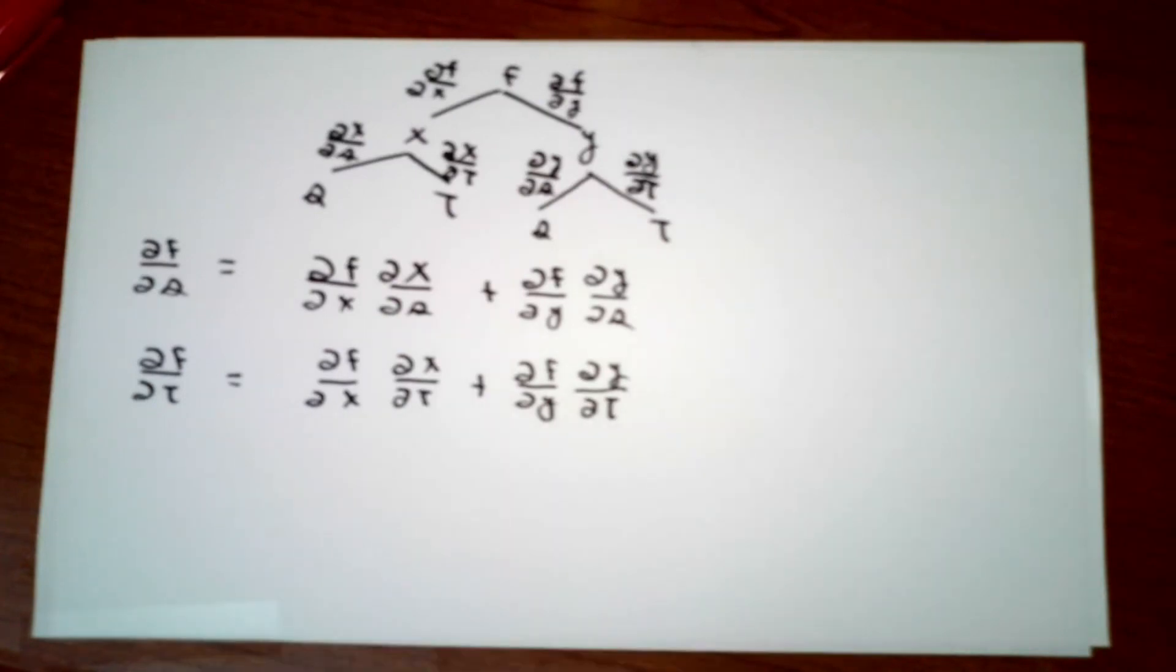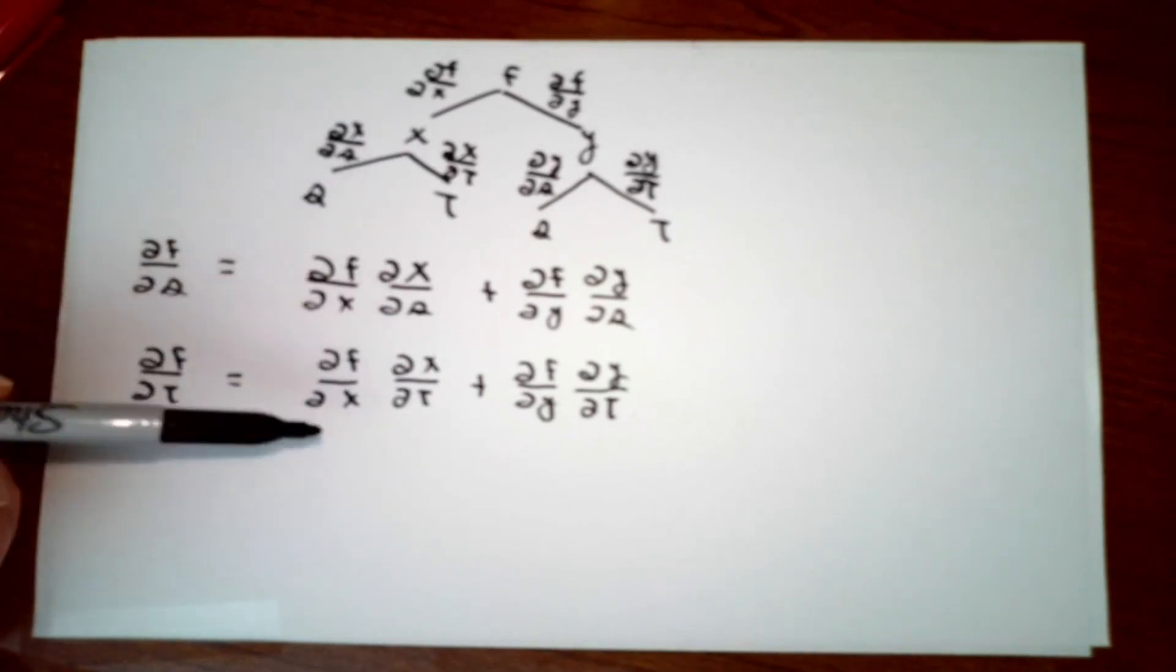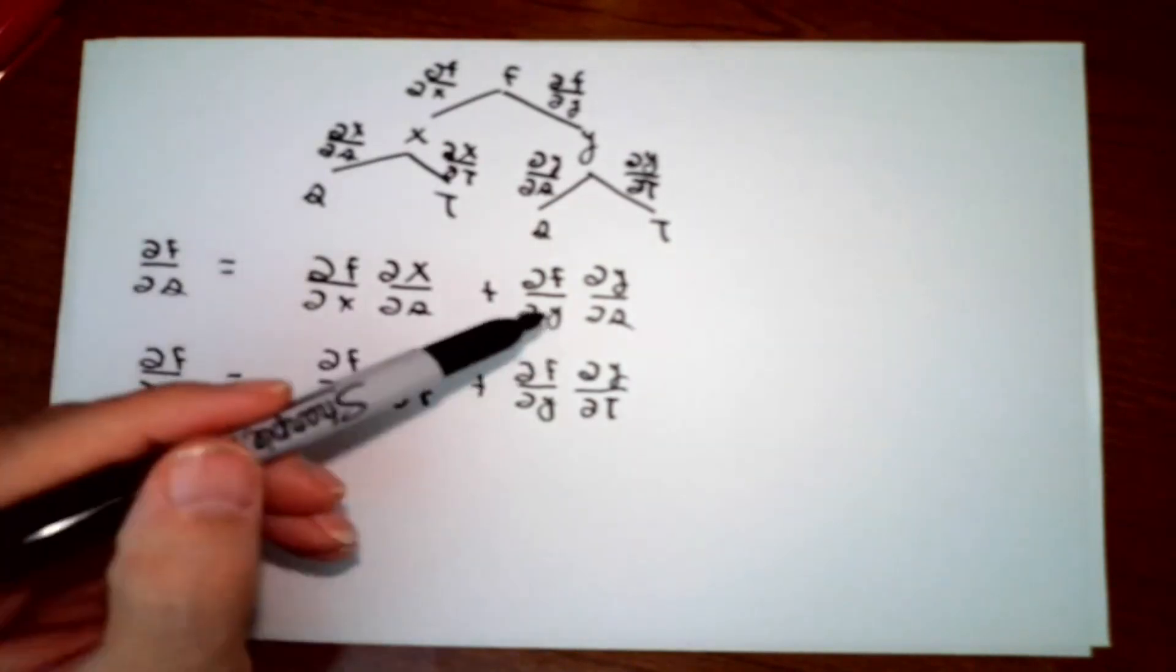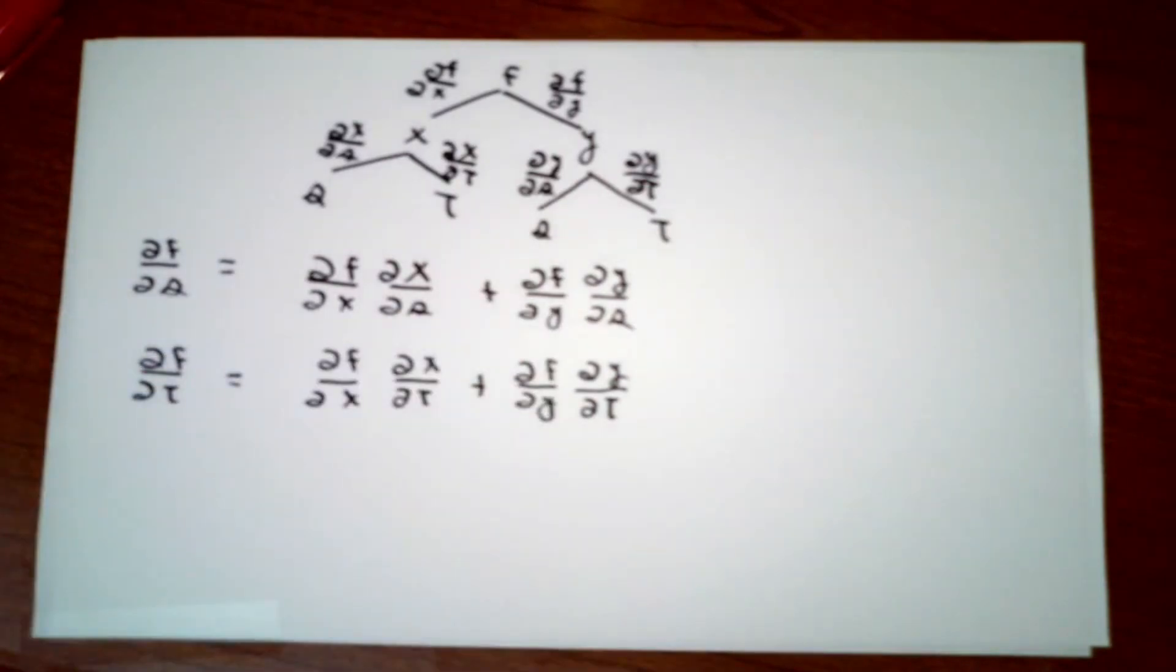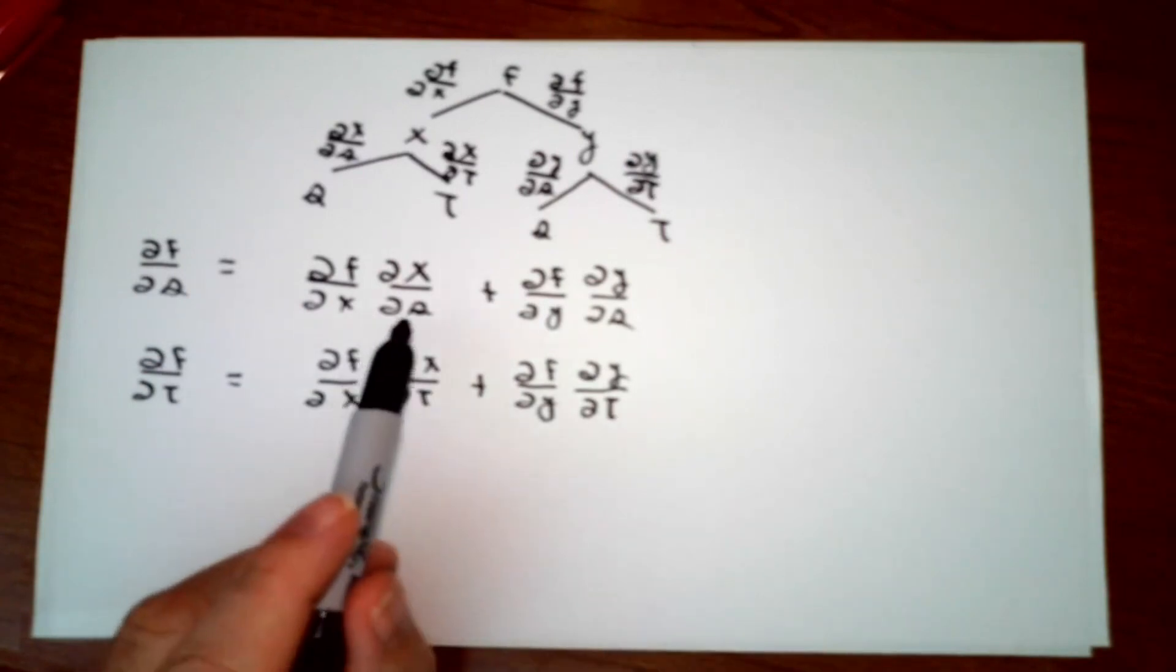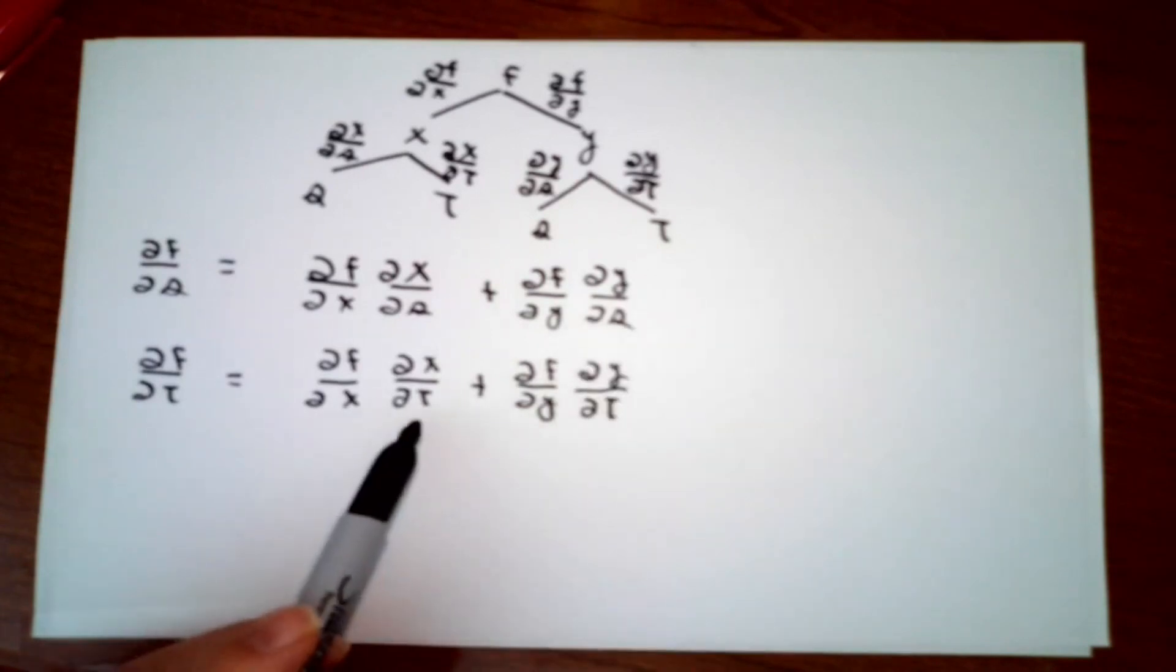Before we go on, I want to observe something about this pair of formulas here. Here are rates of change of f with respect to some variables, in this case s and t. Over on the right-hand sides of the equations, I've got partial of f with respect to one of the other variables and partial of f with respect to y. The other numbers don't have anything to do with function f. This and that, that and that are how the variables are related to each other. So there's two completely different kinds of information here.